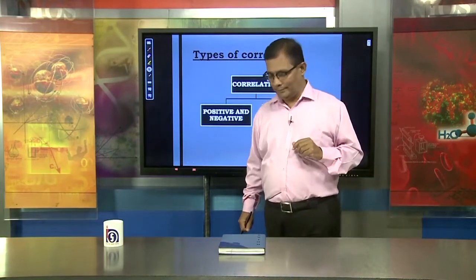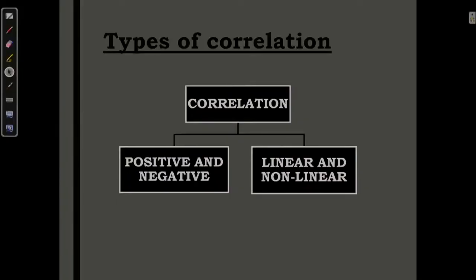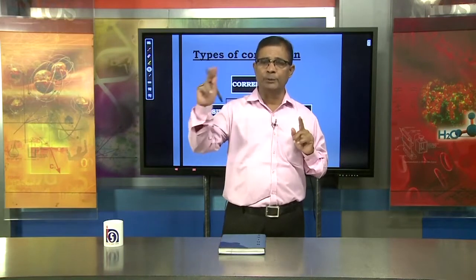Types of correlation. Basically, the first part is positive and negative correlation. The second is linear and non-linear correlation. Positive and negative correlation is easy to understand because it indicates the movement of two variables. When two variables move in the same direction, we call that positive correlation.